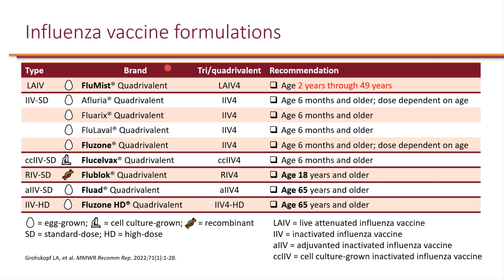We have one live attenuated influenza vaccine — flu mist. Historically, the live attenuated vaccine has performed poorly compared to the inactivated vaccine. For that reason, it is only recommended for persons aged two years through 49, because anyone under age two or age 50 and older is at risk of complications from influenza infection. For those people, we want the more effective vaccines.